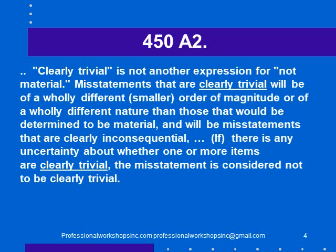ISA 450A2 is an appendix, so not necessarily authoritative, but it is very clear. Clearly trivial is not another expression for not material. Misstatements that are clearly trivial will be of a wholly different, smaller order of magnitude, or of a wholly different nature than those determined to be material, and will be misstatements that are clearly inconsequential. If there's any uncertainty about whether one or more items are clearly trivial, the misstatement is considered not to be clearly trivial.